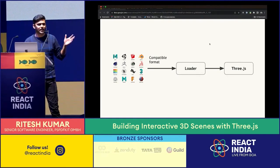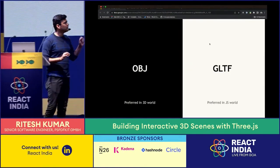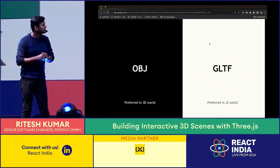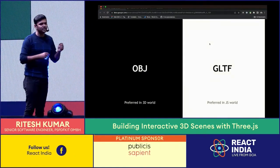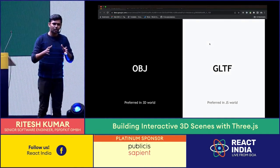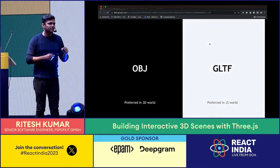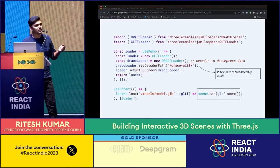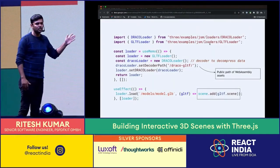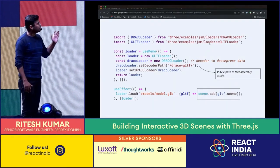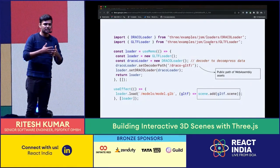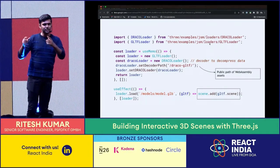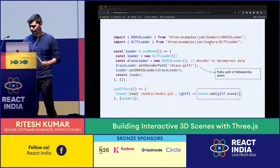There are two popular 3D formats: OBJ and glTF. OBJ is preferred in the 3D world because it's not proprietary to any one company. glTF is popular in the JavaScript world because it's a JSON format and easily readable. I use glTF. The code to load the model involves setting a decoder (since the exported file is compressed) and then doing scene.add(gltf.scene) to import it.